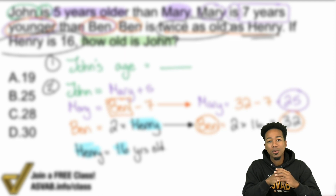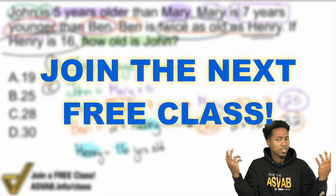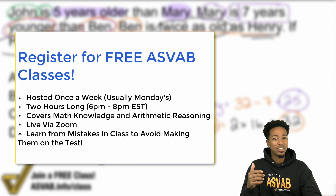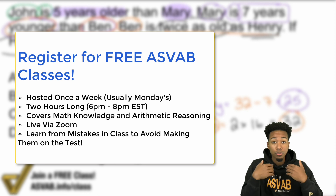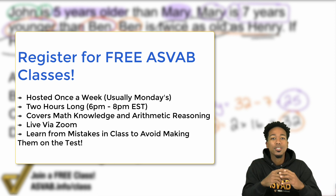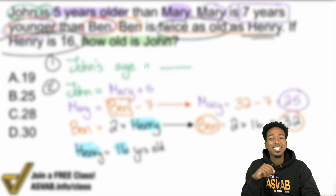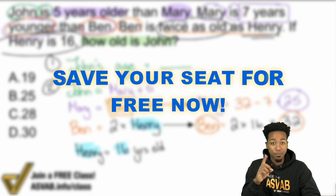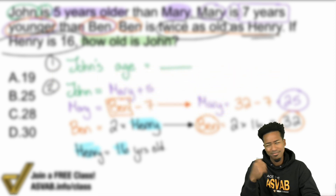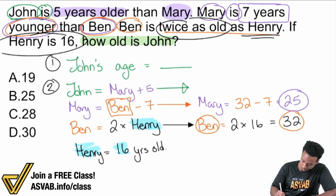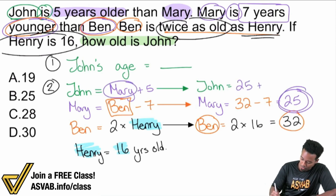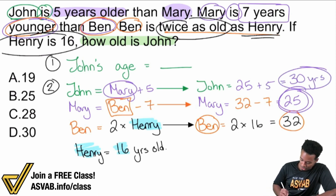ASVAB party people — you're enjoying this video, but why not join me for a free class? I host a free class once a week for two hours of free ASVAB math instruction. Now, John equals Mary, which is twenty-five years old, plus five. Twenty-five plus five is thirty years of age — that is how old John is. John is thirty, and that's why the answer is D. And that's why I want you to join our free class tonight at 6 p.m. to get a free practice test with video solutions.